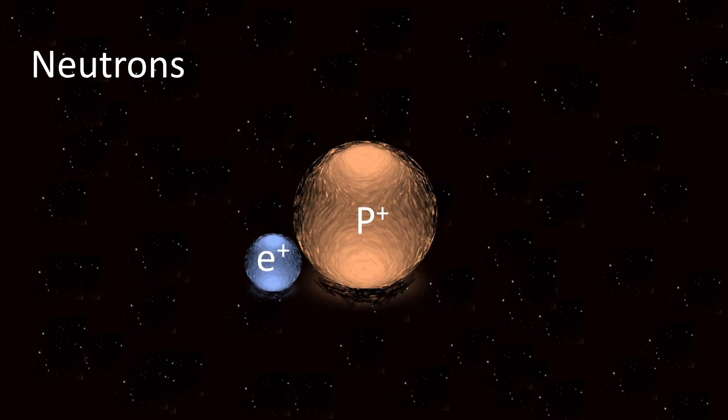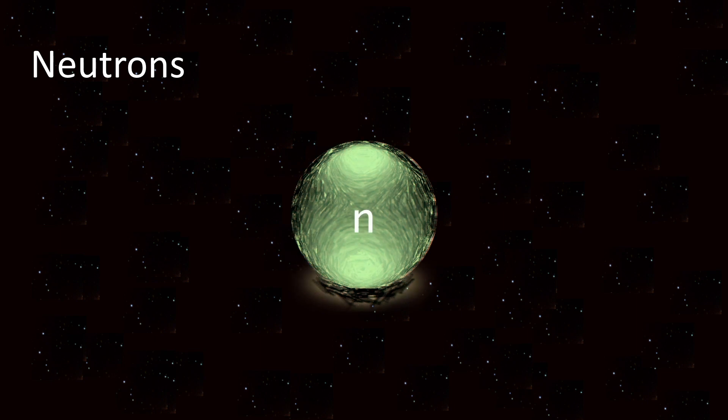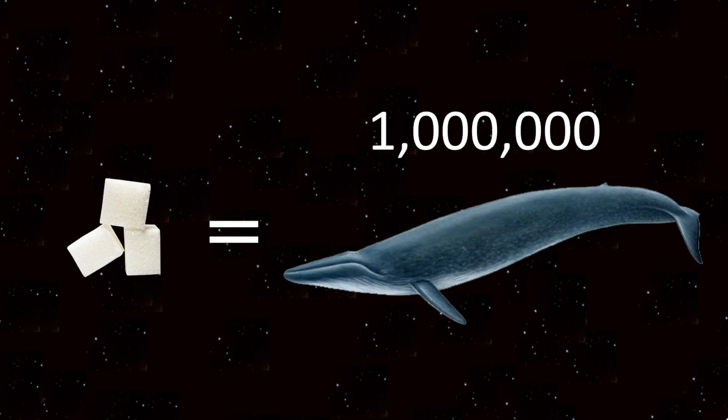These have been produced by the collapse forcing electrons inside protons. They are so dense that a sugar cube-sized chunk of neutron star would weigh the same as a million blue whales.